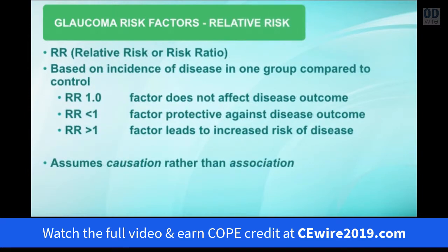Let's talk about relative risk, also known as the risk ratio. It's a calculation based on the incidence of disease in one group compared to a control group. If the risk ratio is one, the factor does not affect the outcome. If below one, the factor is protective. If greater than one, the factor leads to increased risk of developing the disease. The problem with relative risk is that it assumes causation rather than association, and sometimes it's not possible to tell if it's just a spurious association rather than the risk factor actually causing the disease.